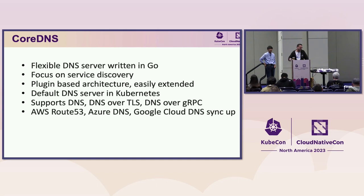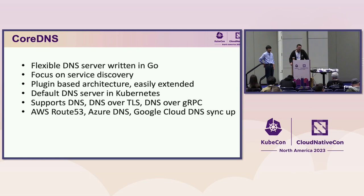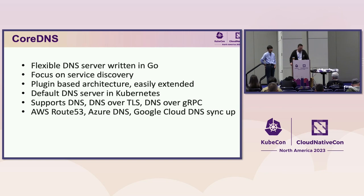We worked to get CoreDNS integrated with Kubernetes so that instead of having three processes all running in a pod with a lot of failure points, we had a single process that talked directly to the Kube API server. The whole goal wasn't just to work with Kubernetes but to work in general cloud-native ecosystems. Kubernetes won, and we primarily do Kubernetes now, although people also use it as just an ordinary DNS server.